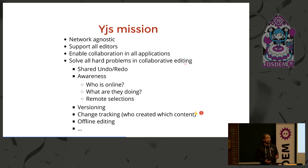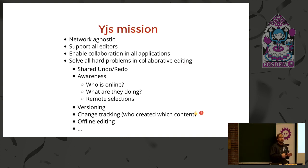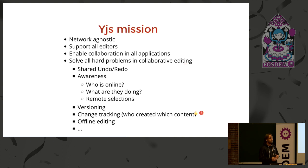YJS gives you the benefit that it already solves all these complex things that happen in collaborative applications. For example, shared undo/redo — it's a really complex problem. I'm working on a document and I hit undo; I should not be able to undo the changes that you created, only the changes that I did. There's a lot of state tracking involved, and that's a problem that YJS solves — giving you shared undo/redo in all your applications just by using this framework.